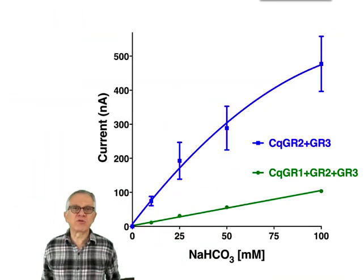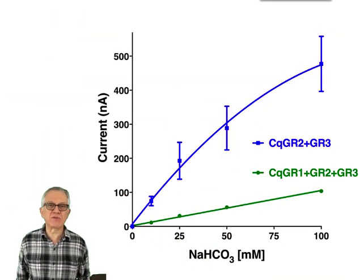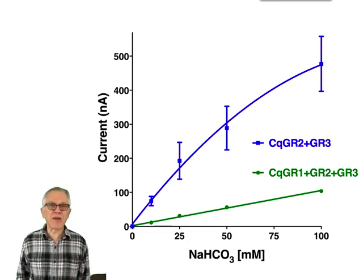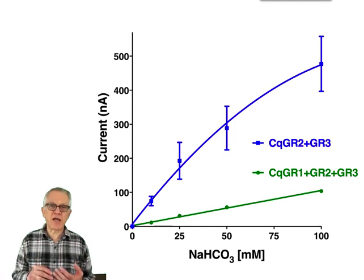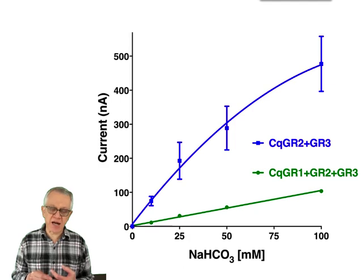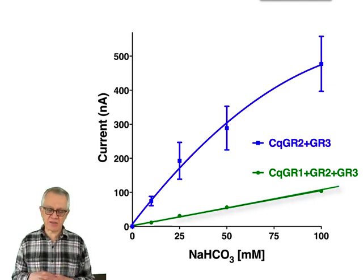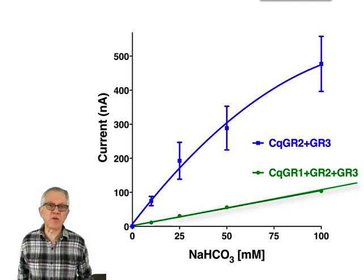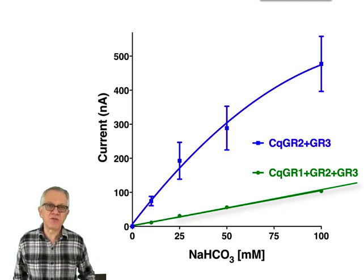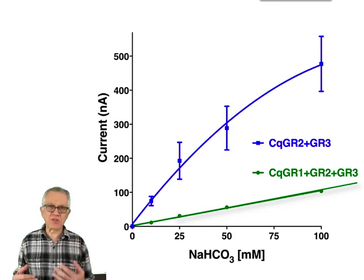Then we conducted a dose-dependent response with this receptor, comparing the receptors GR2 and GR3 alone with GR2 and GR3 plus GR1, shown here in the green line. As you see, when we add GR1, the response of the receptor decreases significantly.